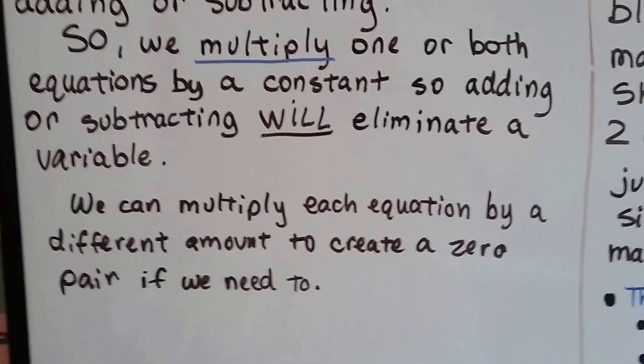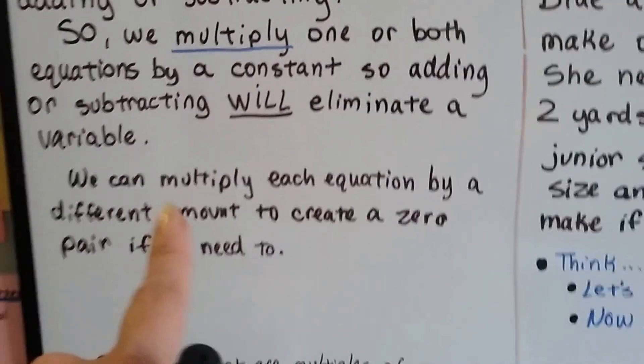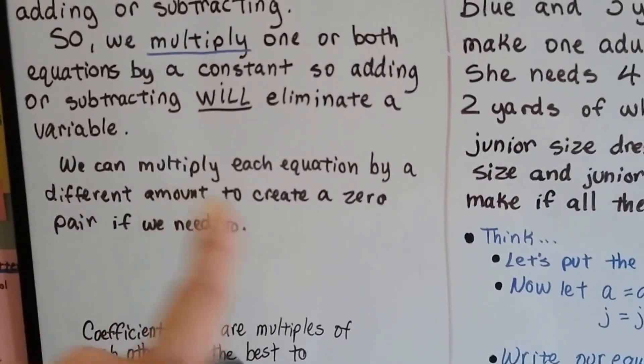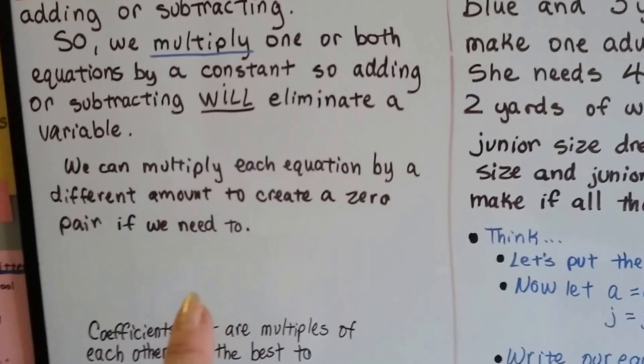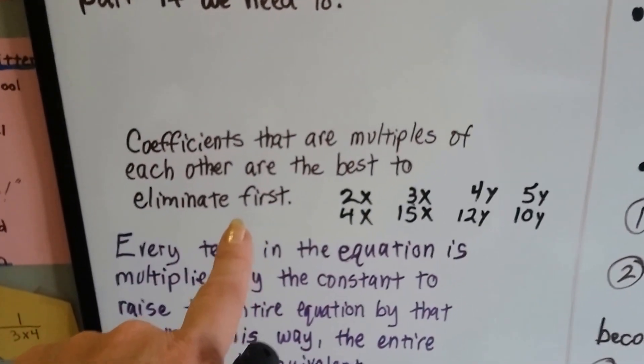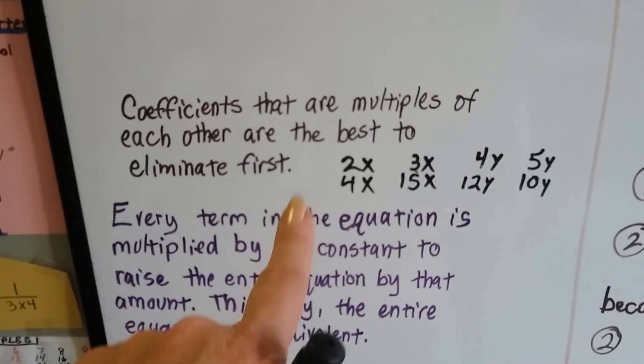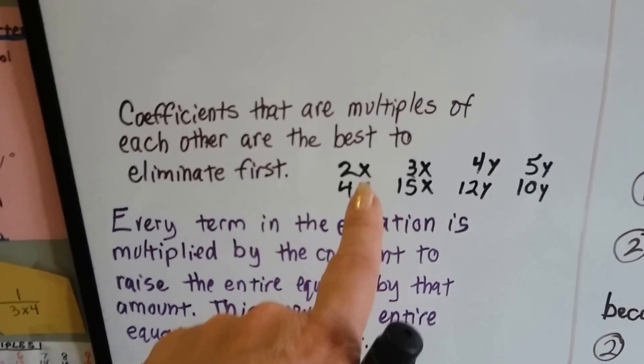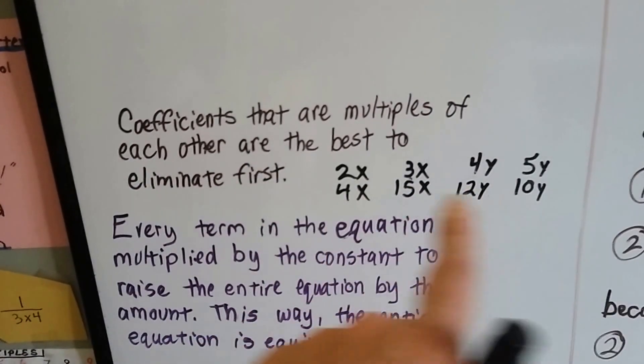Now, we're not going to do that this time, but we could multiply each equation by a completely different number if that is how we can create a zero pair. Just remember that coefficients that are multiples of each other are best to eliminate first, and it doesn't matter what you multiply it by.